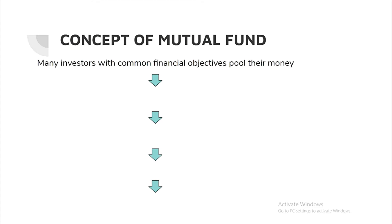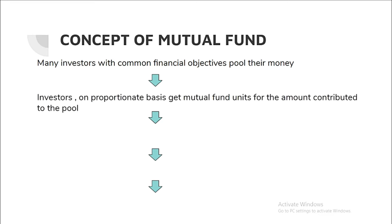In a mutual fund, many investors with common financial objectives pool their money. For example, investors expecting regular income will invest in income schemes. Investors expecting financial growth will invest in growth schemes. And investors seeking tax benefits will invest in tax saving schemes like ELSS — equity linked saving schemes.